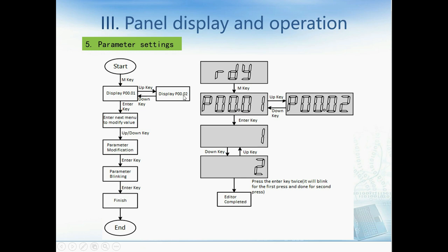If we click the Enter key, we can enter the next menu to modify the value of P1. We use the up and down buttons to change the value. Then we use the Enter key to confirm the parameter. Note: we need to press the Enter key twice — it will blink the first time and confirm the second time — and then the parameter is changed successfully.